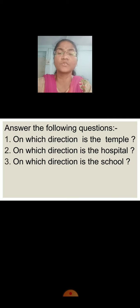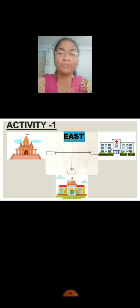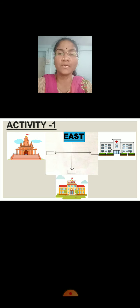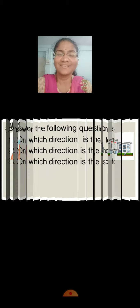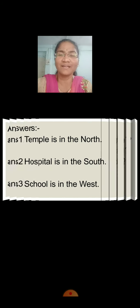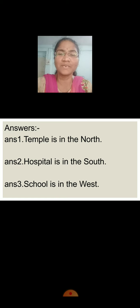On which direction is the temple, children? I hope you all know all the four main directions by now. East is shown, and opposite to east is always west. The left side of west is always north and the right side of west is always south. So now can you tell me on which side is the temple? The temple is in the north.